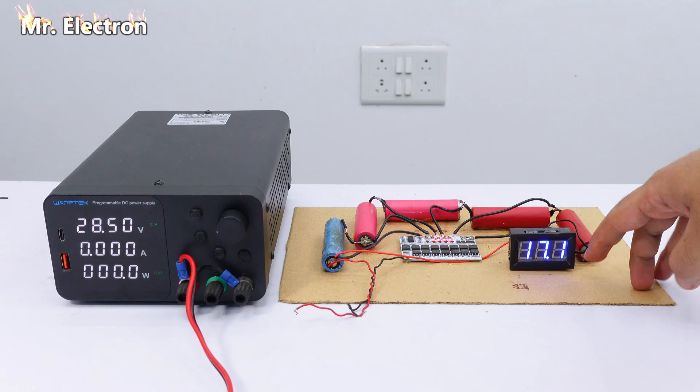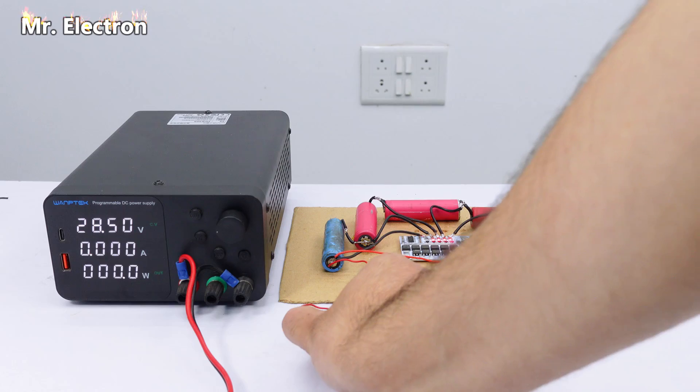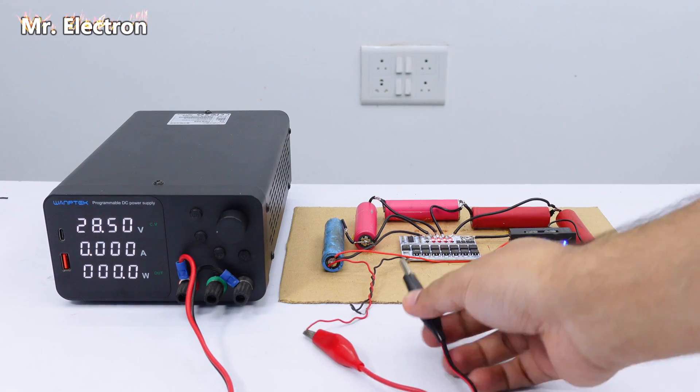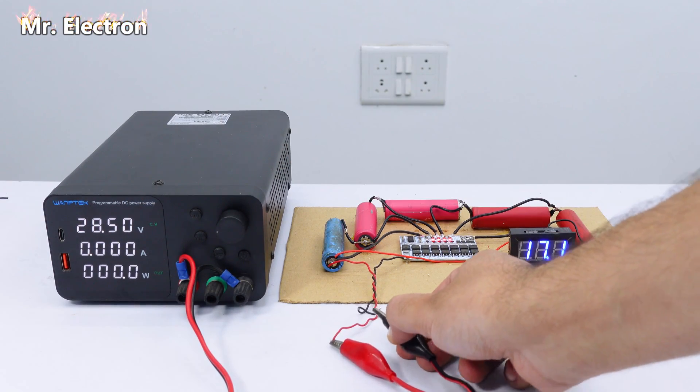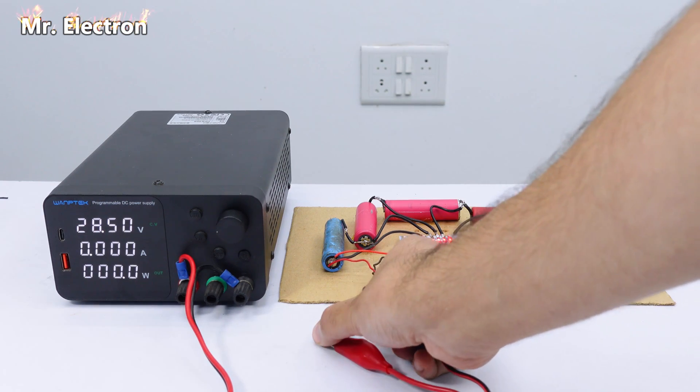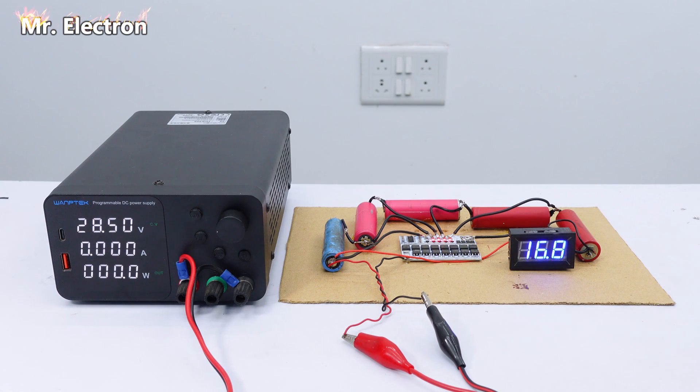So here I have successfully discharged the batteries to 17.1 volts and now I believe that they should start charging. And one more thing, I've reduced the current to 1 ampere. And go. Seems like there is something not fine with the BMS. So let's finish off the test here and I will do the 5S testing maybe some other day. See you in the next one. Bye bye.